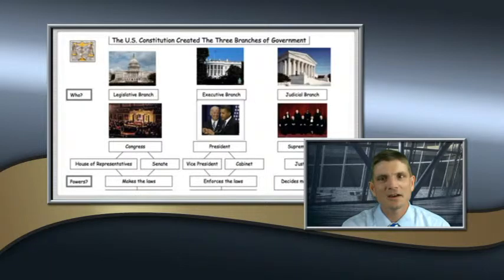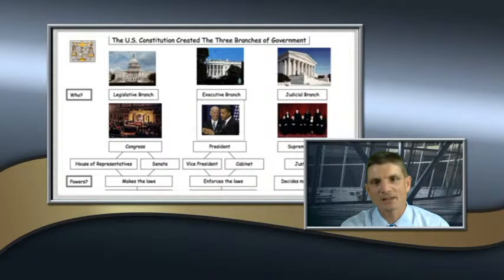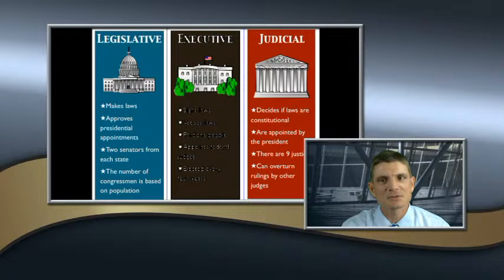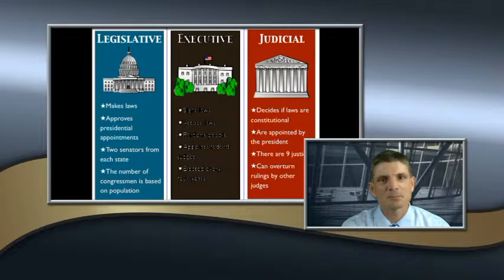The U.S. Constitution provides a framework for government, describing what it may and may not do. For example, the legislative branch whose job is to create laws, the executive branch whose job is to enforce the laws, and the judicial branch who applies and interprets the laws.